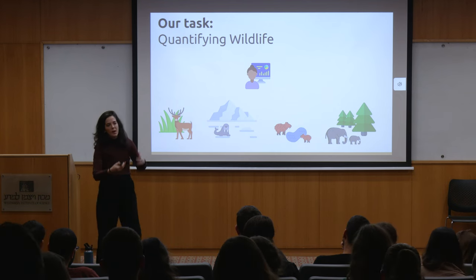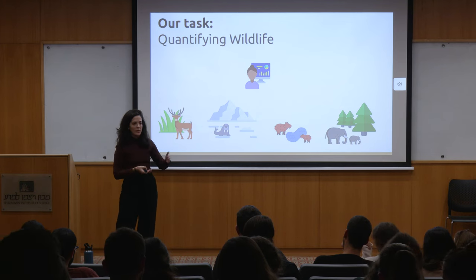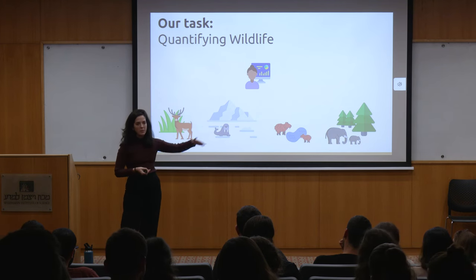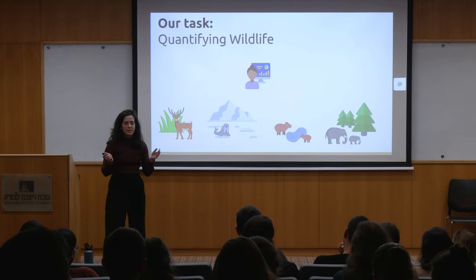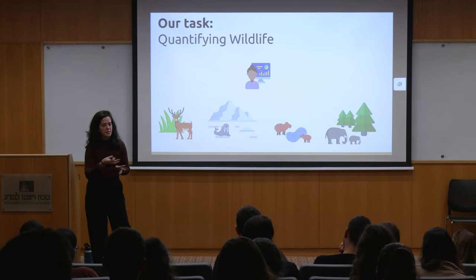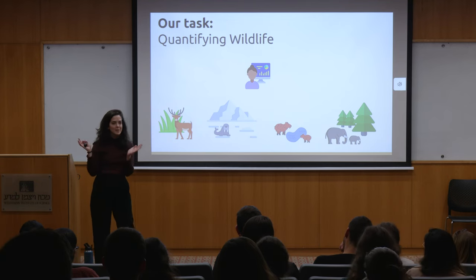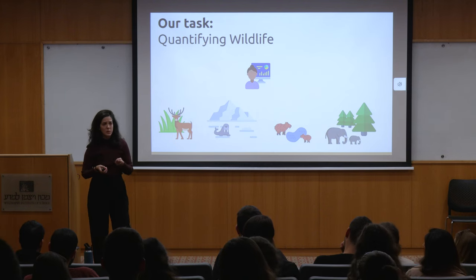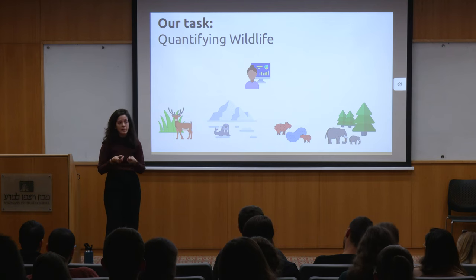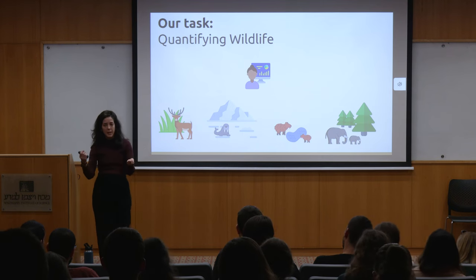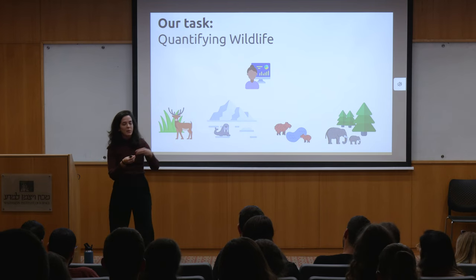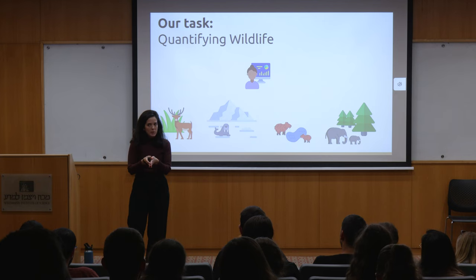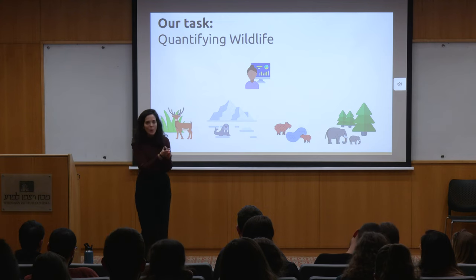Imagine a scenario where someone woke up in the year 2100 and said, 'Oh, there are only 10 deer in the world,' and their neighbor told them, 'You know, there were always just 10 deer in the world - it's fine.' So if we have some quantitative perspective now, we can have a better understanding of what's going to happen in the future and what happened in the past. No one can convince us that things have never changed - this phenomenon is called shifting baselines.